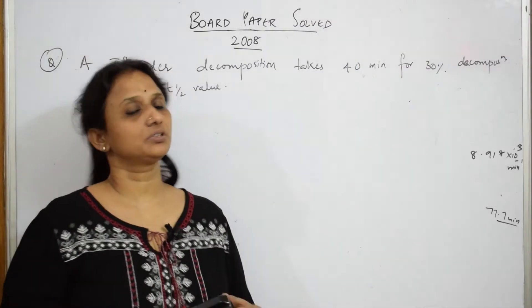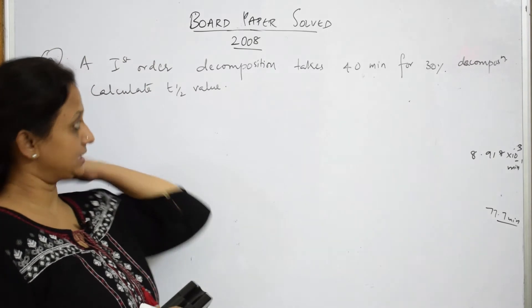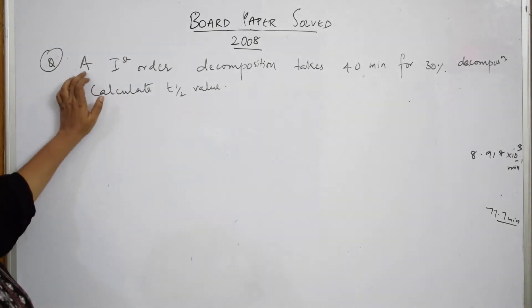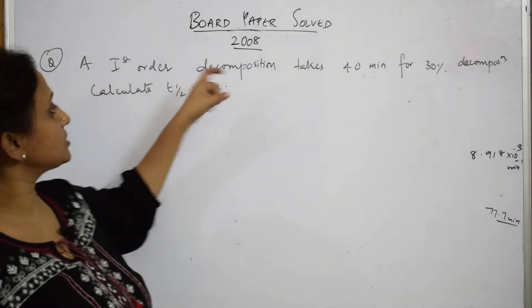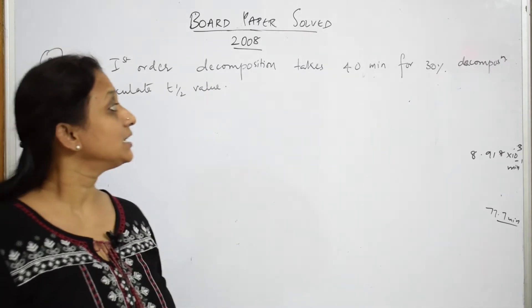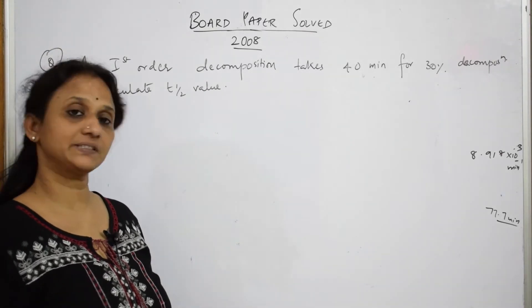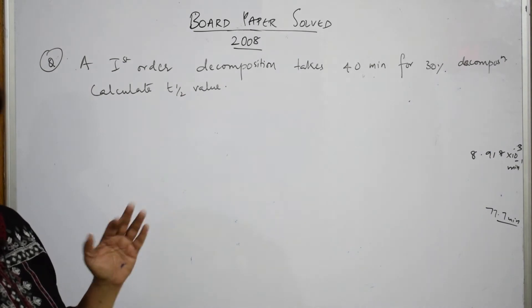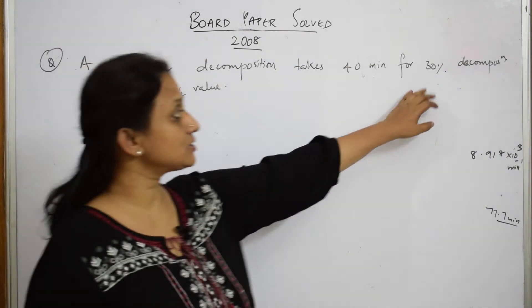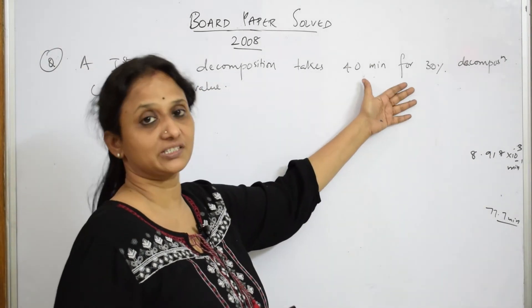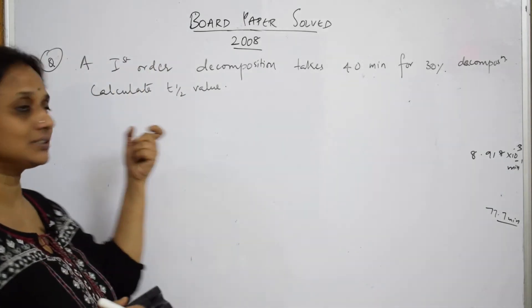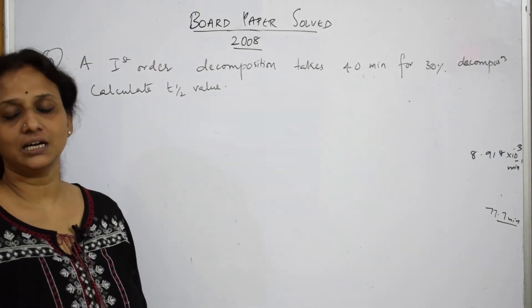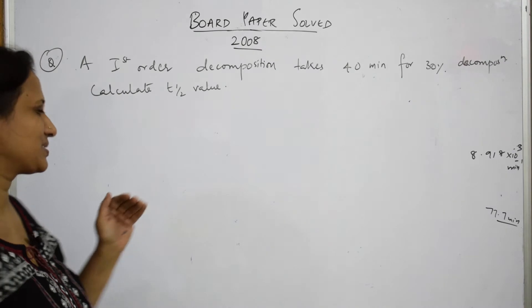Let us read the question. What is given to us? A first order decomposition reaction takes 40 minutes for 30 percent decomposition. So that means a particular reaction for 30 percent to decompose took 40 minutes. I have to find out the t half value, the half-life period of that particular reaction.